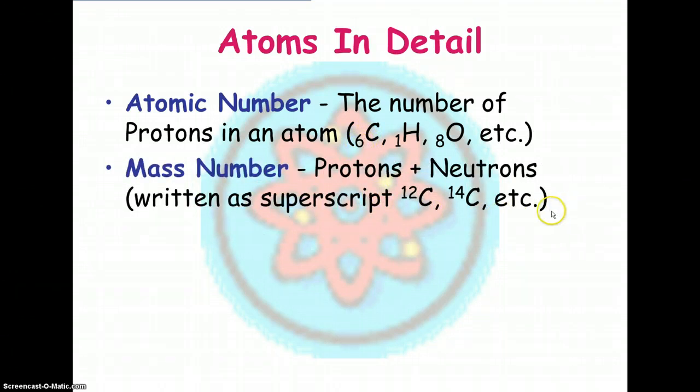The mass number, which is the number of protons and neutrons added together, is sometimes indicated in the upper left here. So this would be called carbon 12. This one would be called carbon 14.